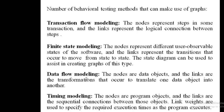In data flow modeling, the nodes are used to represent data objects, and the links are used to represent transformations that occur to translate one data object into another. So data objects are represented as nodes, and the transformation from one data object to another is represented as links in data flow modeling.